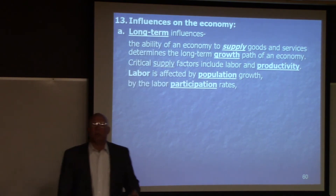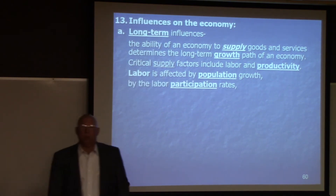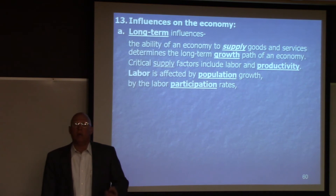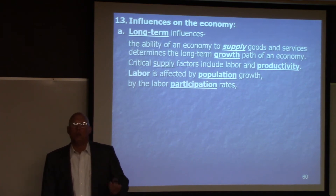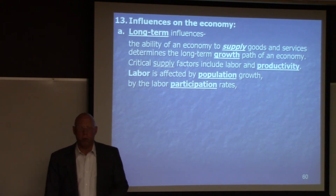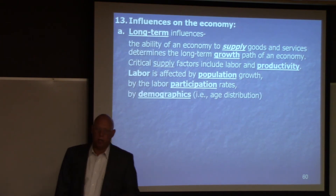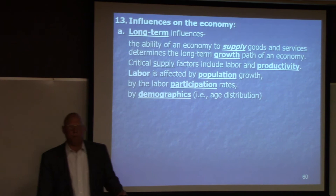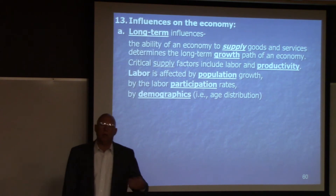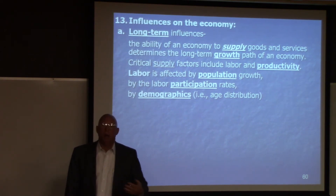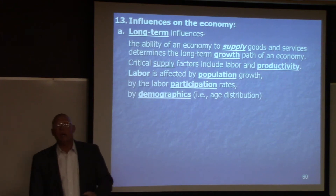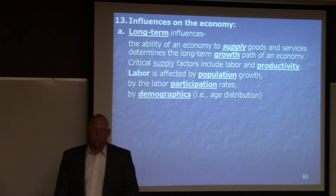Social Security and Medicare are in danger because our population is aging and we don't have enough young people to support the old people. Then we have labor participation — what percentage of working-eligible people are trying to work? That's called the labor participation rate, and it's an important number. We look at the number of the population, how many people are trying to work, and what is the age of our population.